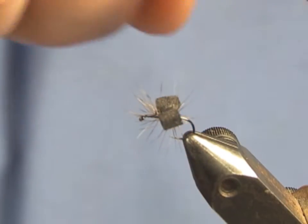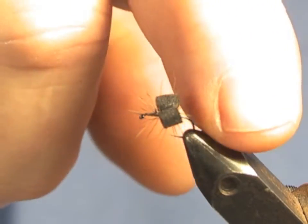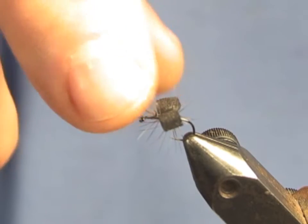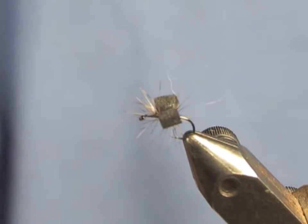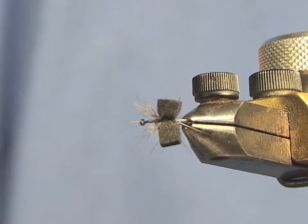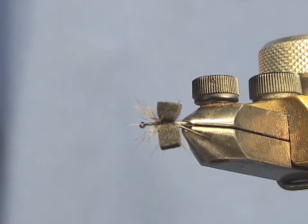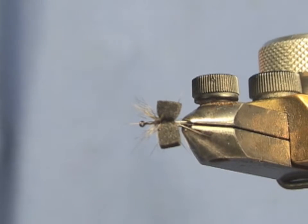Normally when you see an ant tied, the foam is laying across from the bend of the hook to the eye of the hook, but that gives the impression that the ant has legs sticking out of its head and out of its butt, and most ants don't have legs sticking out of their butt.